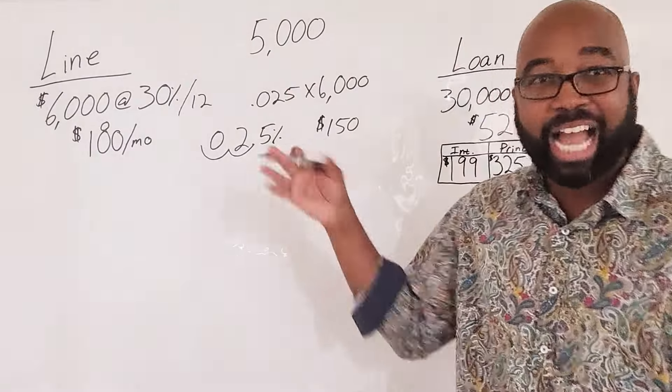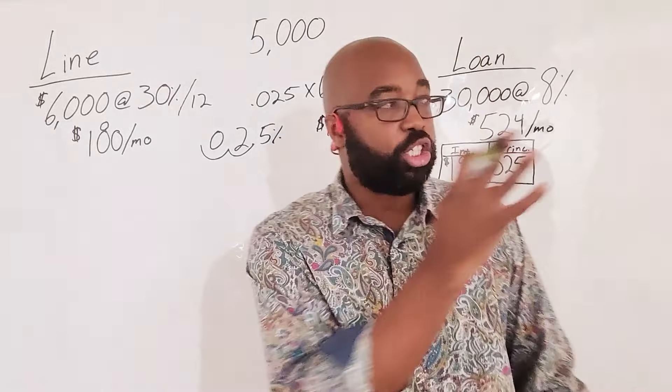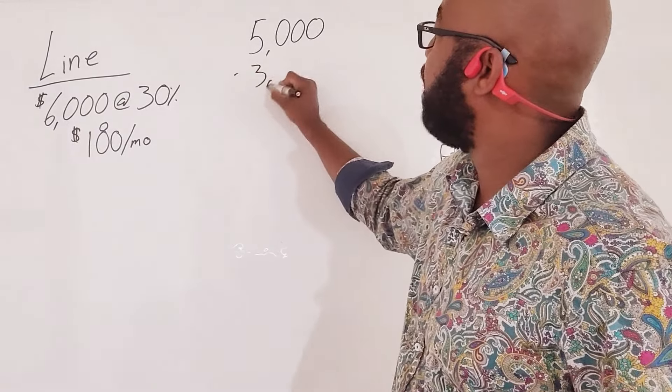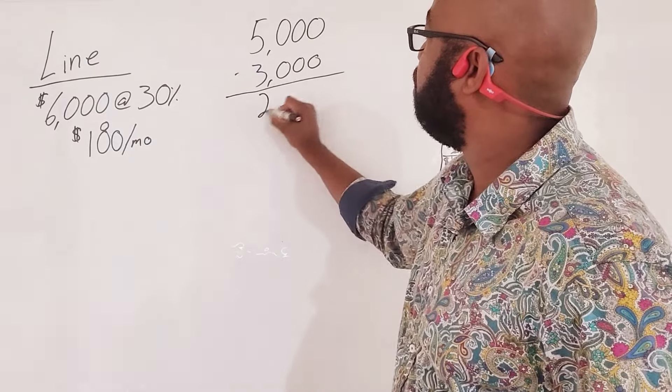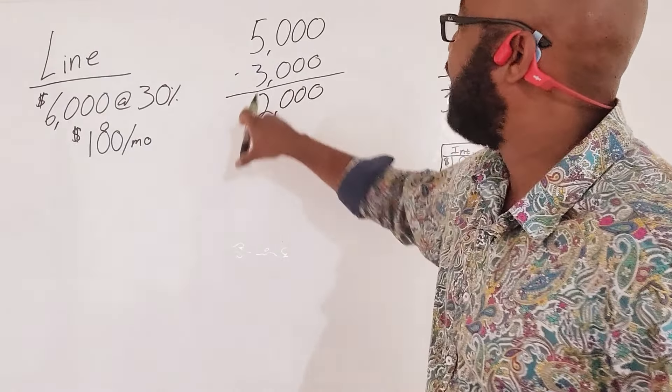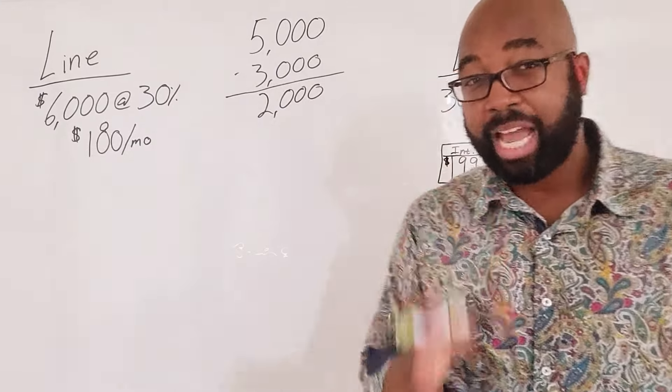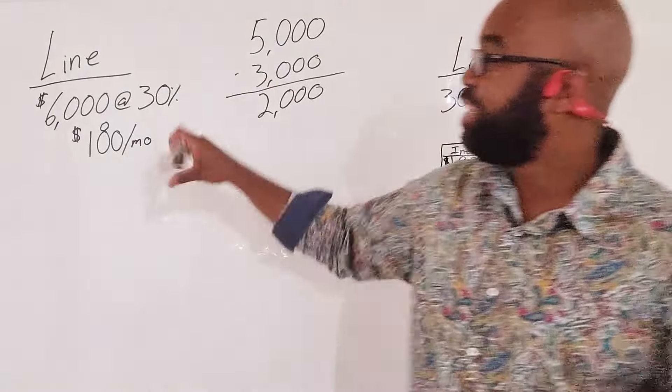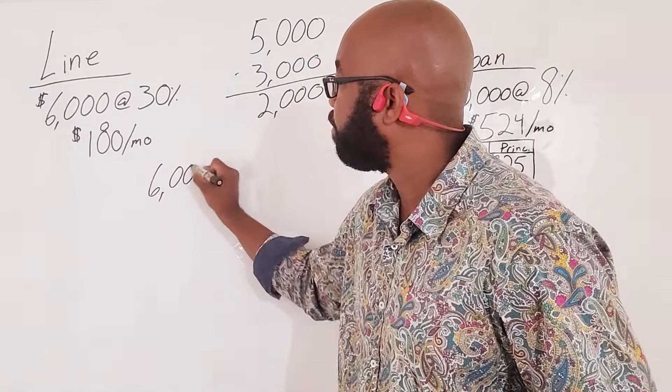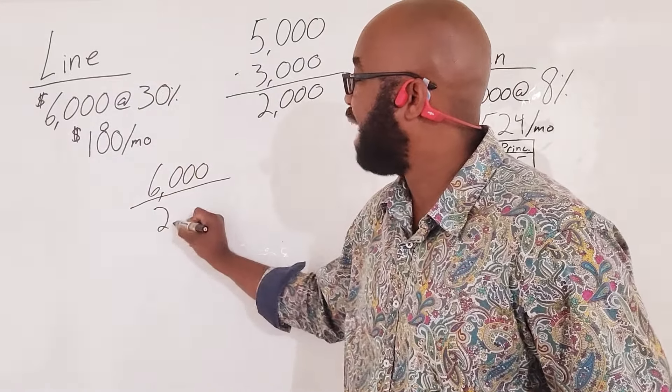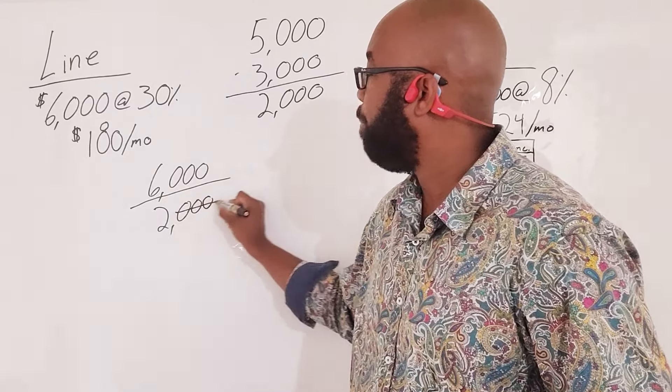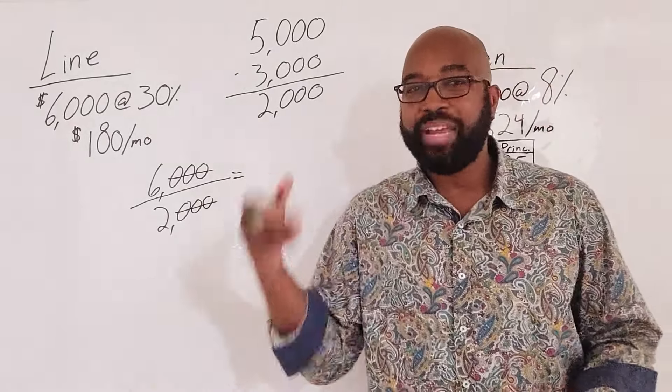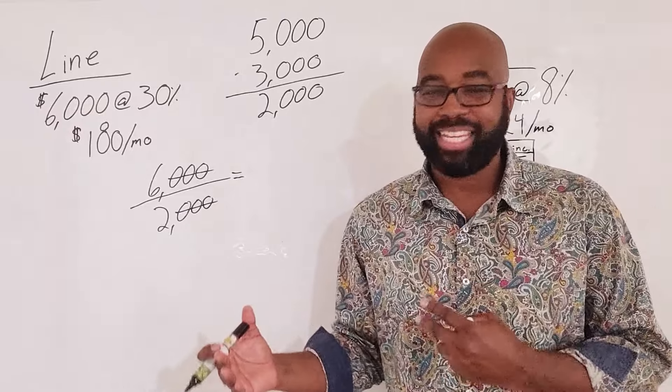So let's go ahead and get rid of this loan. Since we've already established that, yes, we still got expenses, we're going to take that out so that we have the cash flow of $2,000. Where's that cash flow going to be located? It's going to be located within this line of credit. So we take the balance of $6,000 divided by $2,000, which is the cash flow. And we come up with our velocity term.